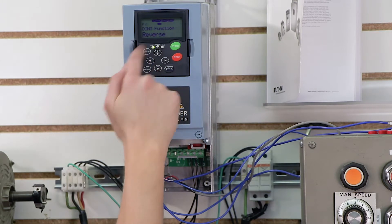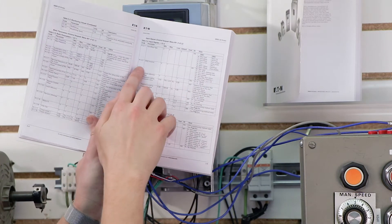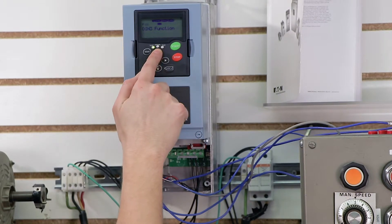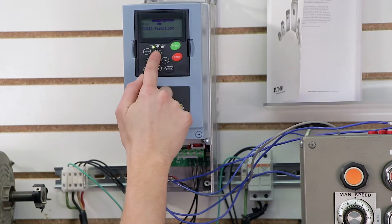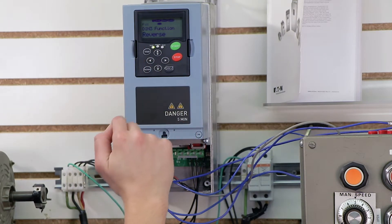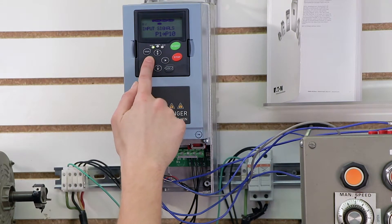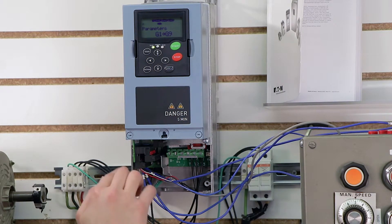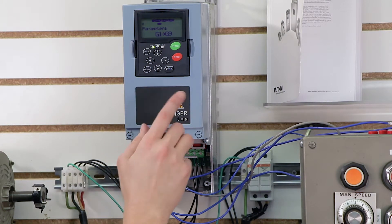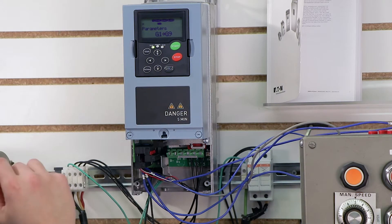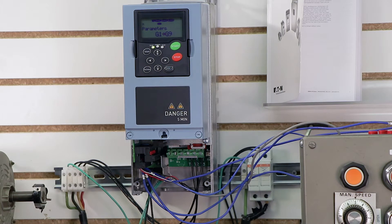Now I'm going to go to 1.2.2, which is our digital input 3. I'm going to press right again, and I'm going to scroll up through these until I find my reverse function, which is right here, and I'm going to press enter. And that is it for programming. I've set up both my digital inputs for start and stop, my first two digital inputs, and then I also set up my third digital input for my forward reverse on the selector switch. So let's go ahead and test it.